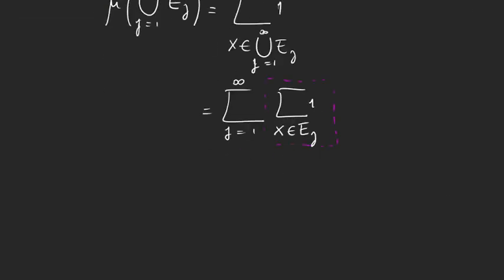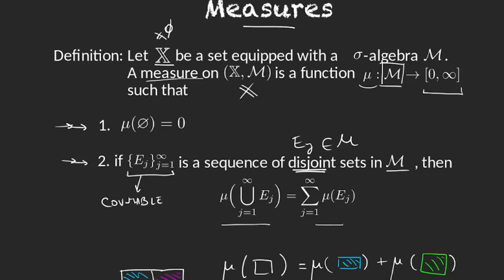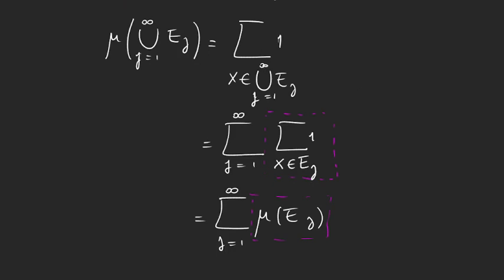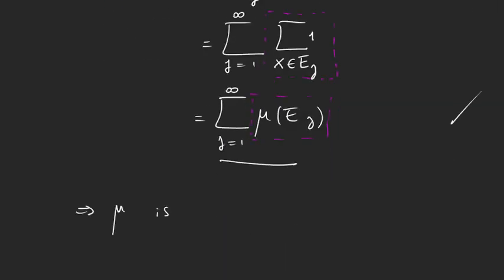Then this is, we have this sum outside from j equals 1 to infinity. And this, we said, it was mu of E sub j. Okay? This pink part right here, the rectangle, is just the measure of the E sub j set in our sequence. So then, that's it. Well, if we go up and check the second property, it was that mu of the union is the sum of the mu's. So then, that's exactly what we have here. Mu of the union, the measure of the union, is equal to the sum of the measures. And so we can finally say, our function mu satisfies both properties, then mu is a measure.